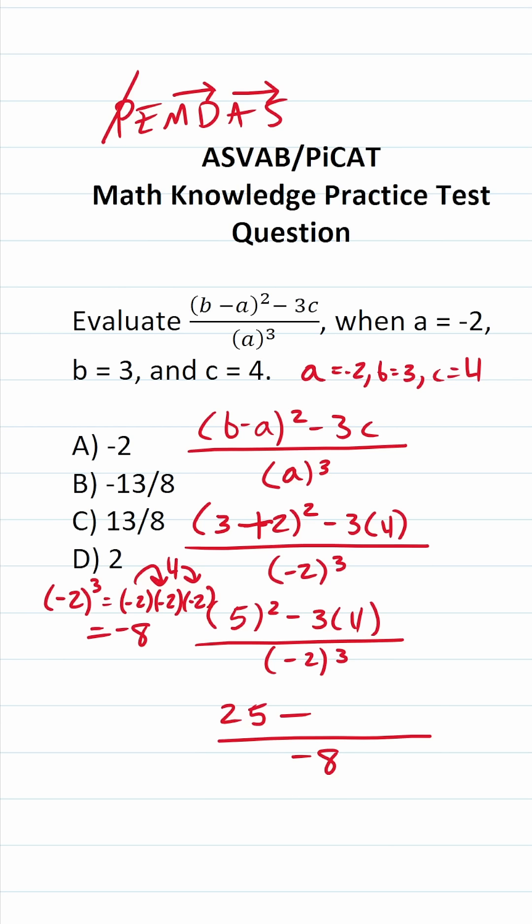Since we've already taken care of everything else, let's handle this multiplication as well. 4 times 3 is 12. Let's keep working this out.